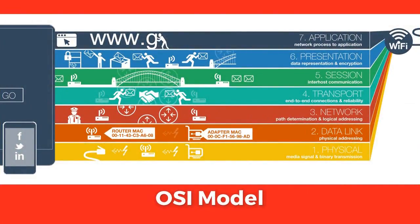Let's discuss the OSI model. The OSI model, or the Open Systems Interconnections model, was developed in 1984 by the International Standards Organization, or ISO. The core of the standard is the OSI reference model, which consists of seven layers defining the different stages that data must go through to travel from one network to another. It is just a guideline, and many protocols cover more than one layer. It is divided into two sets: the application set and the transport set.